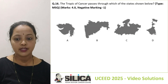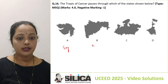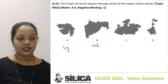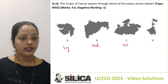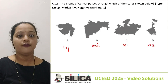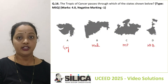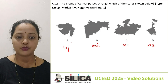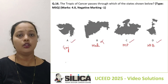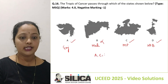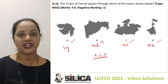Option A is the map of Gujarat, option B is Maharashtra, option C is Madhya Pradesh, and option D is West Bengal. The Tropic of Cancer passes through Gujarat, Madhya Pradesh, and West Bengal — not Maharashtra. So the correct answer to this question is A, C, and D.